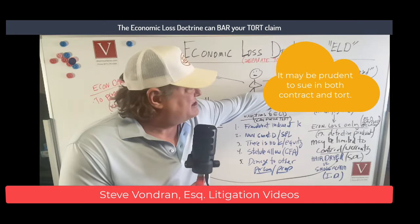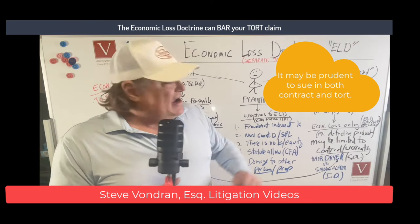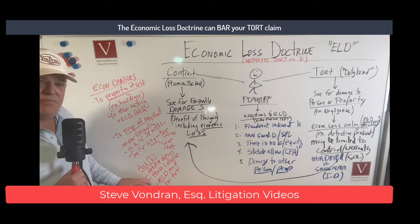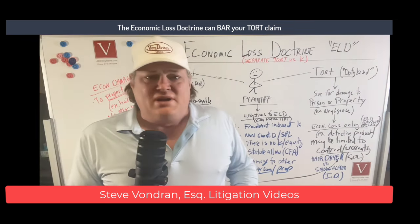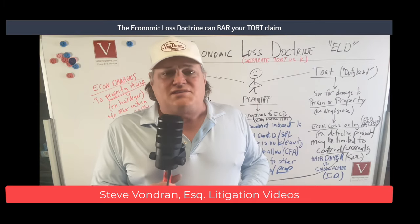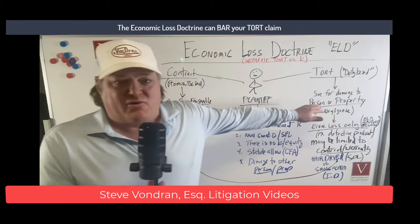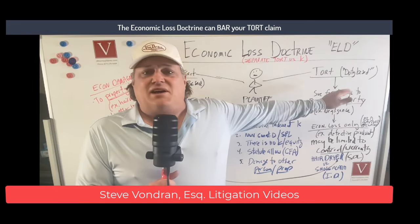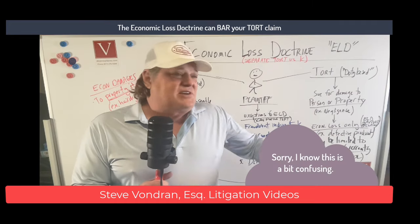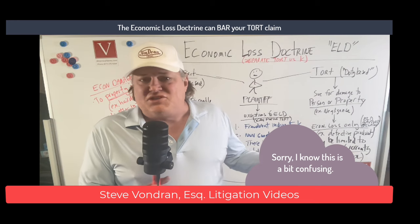Tort — negligence and things like that — are duty-based. It seems like maybe there is some kind of breach of duty here by the architect, but the architect entered into a contract with you, so you may be limited under the economic loss doctrine, which might be raised as a defense. You may be limited from suing in negligence. The economic loss doctrine may bar that tort claim. And this could involve all kinds of different torts — there are seven or so additional intentional torts.